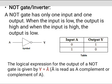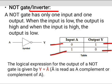The logical expression for the NOT gate is Y equals A complement. The NOT gate is also called an inverter. The NOT gate performs a basic logic function called inversion or complementation. The inverter changes one logic level to its opposite level — from logic 0 to logic 1, and logic 1 to logic 0.